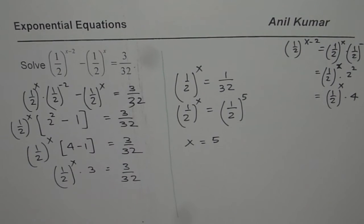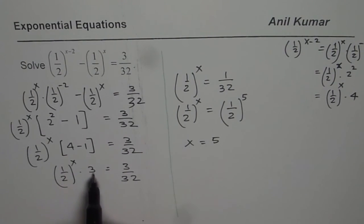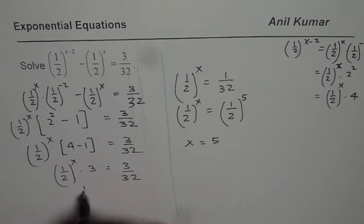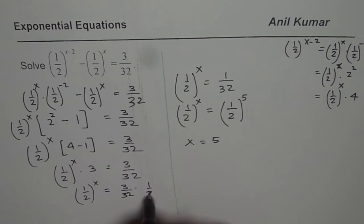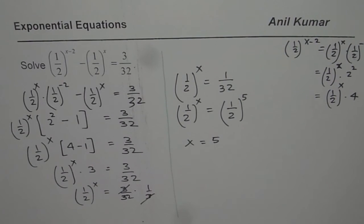So that is how you can solve these equations. I hope the steps are clear. We divide by 3, so we could also write half to the power of x equals 3 over 32 times 1 over 3 — the 3s cancel and we get 1 over 32. That is how you solve this particular equation. I hope you understand and appreciate it. Thank you and all the best.